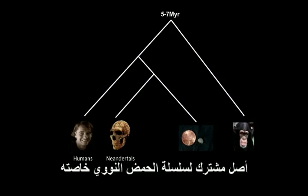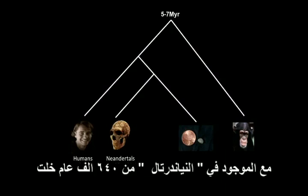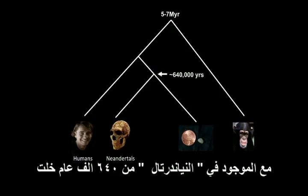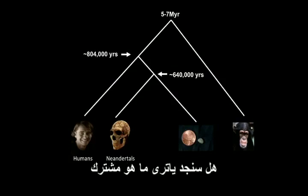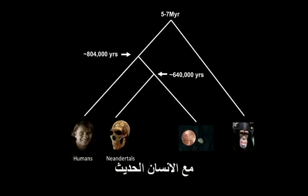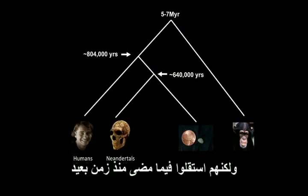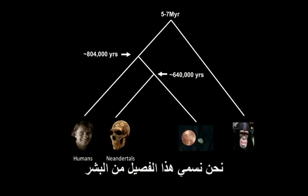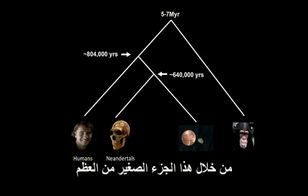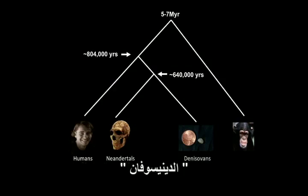The bone was well enough preserved so we could determine the DNA from this individual — even to a greater extent than for the Neanderthals — and start relating it to the Neanderthal genome and to people today. We found that this individual shared a common origin for his DNA sequences with Neanderthals around 640,000 years ago, and further back, 800,000 years ago, there is a common origin with present-day humans. We call this group of humans the Denisovans, after the place where they were first described.